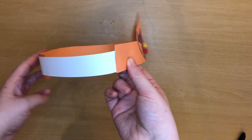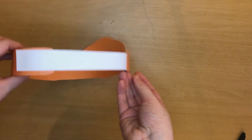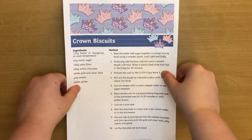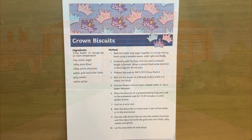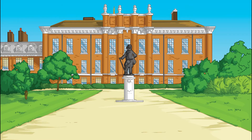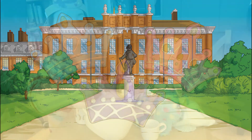Finally, a royal tea party needs some very fancy biscuits. This recipe makes delicious crown biscuits, perfect with a spot of tea. Remember to supervise children carefully when cooking.